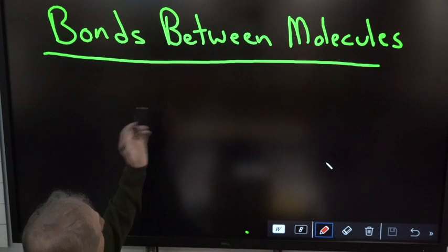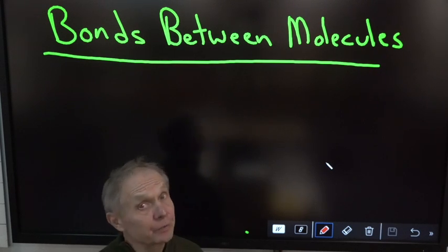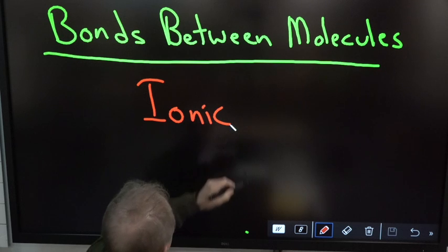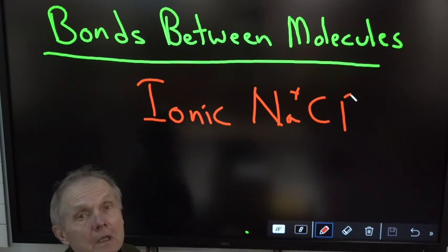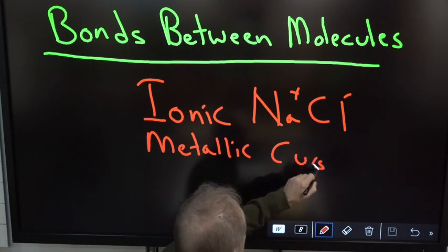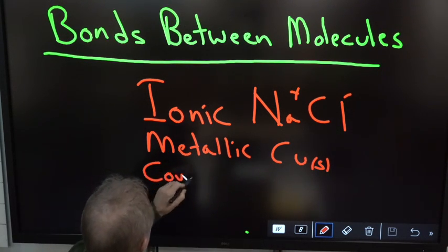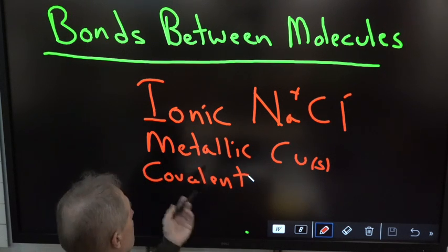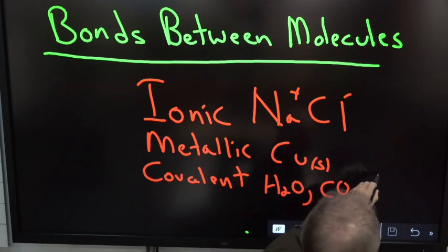Today's video is about bonds between molecules. We've done several videos about bonds between atoms, which is really different. The bonds between atoms would be ionic, like Na⁺Cl⁻. There's also metallic, like bonds between copper atoms, and covalent, which are bonds between non-metals like H₂O, CO₂, or NH₃.